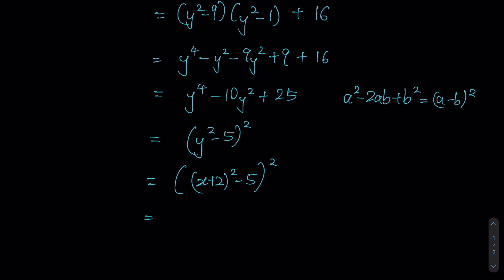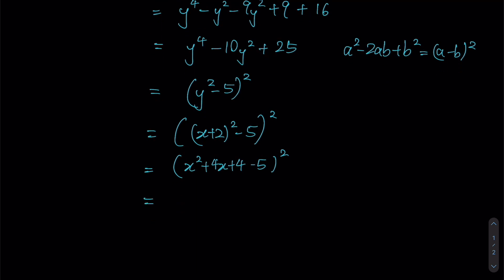Let's expand this out. We have (x² + 4x + 4), because (a + b)² = a² + 2ab + b², minus 5, whole thing squared. This will give us (x² + 4x - 1)². Since this expression within the brackets can't be factorized any further, this will simply be our final factorized form.